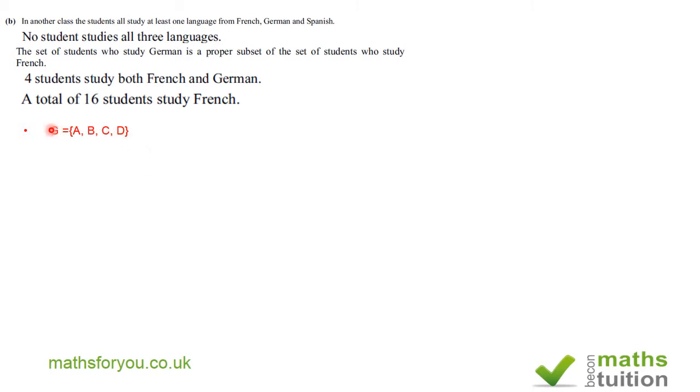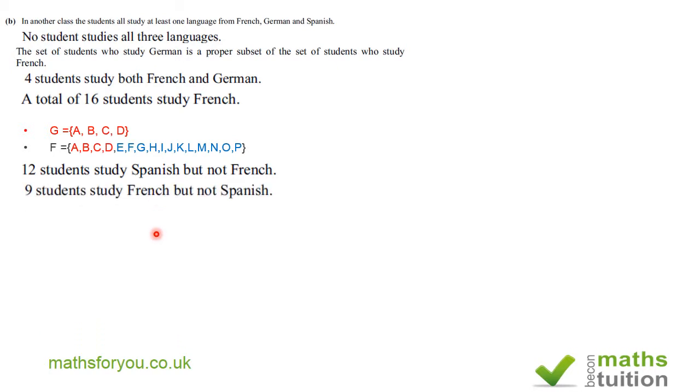Now, this is my G set or my German set. And in my German set, I've got student A, student B, student C and student D. That's my German set. And this is my French set. In my French set, I've also got the four students who study German. So, that is a proper subset of F, subset F. Twelve students study Spanish but not French. Nine students study French but not Spanish. And draw a Venn diagram to present this information.